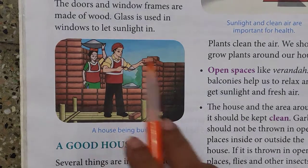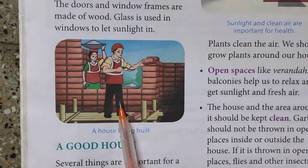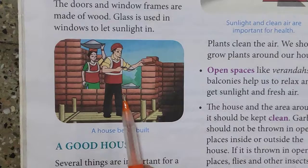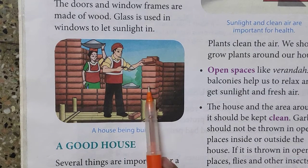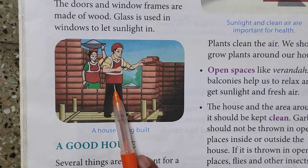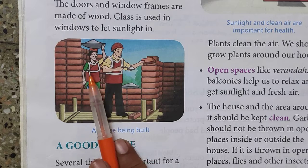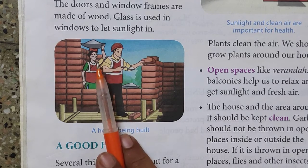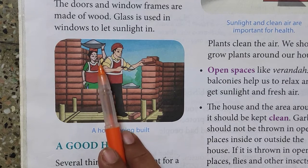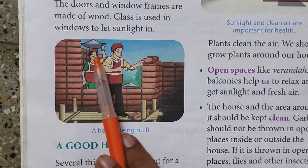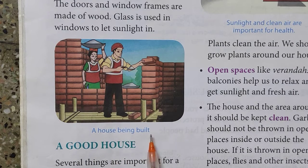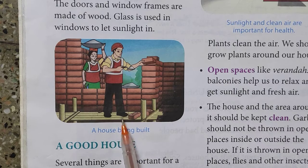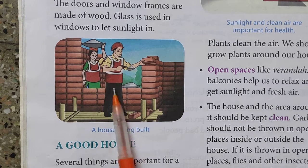If you can see the picture, a building is being built by the mason. The person who builds the walls is called a mason. There is a lady carrying some concrete in a basket. A house is being built here.